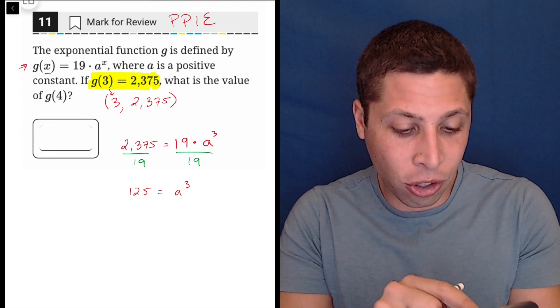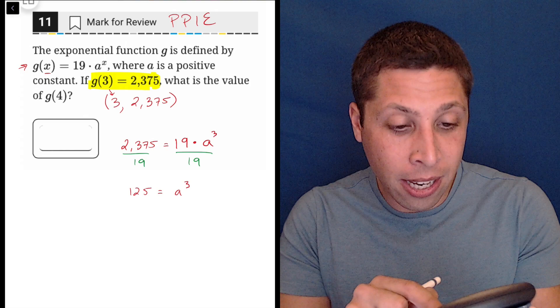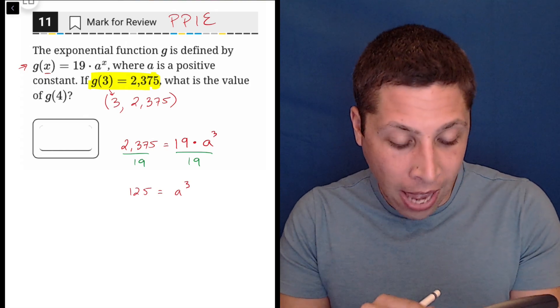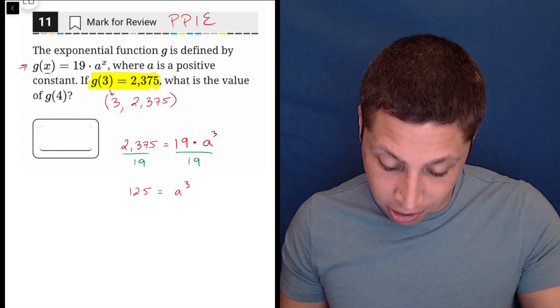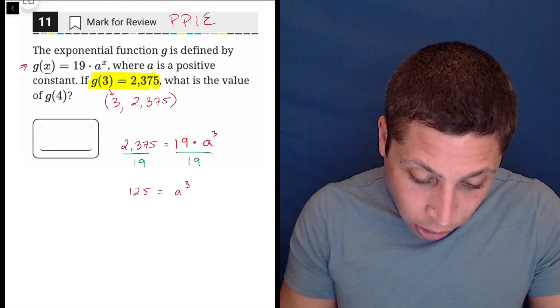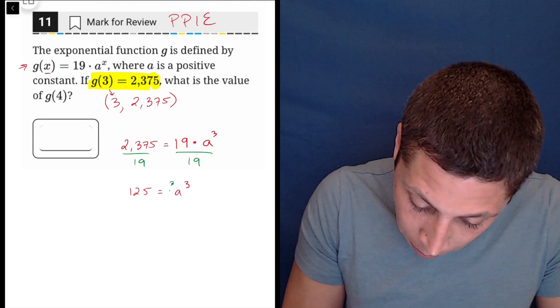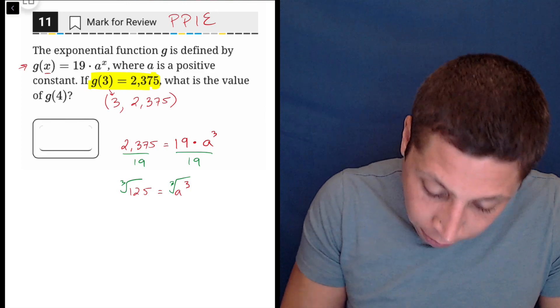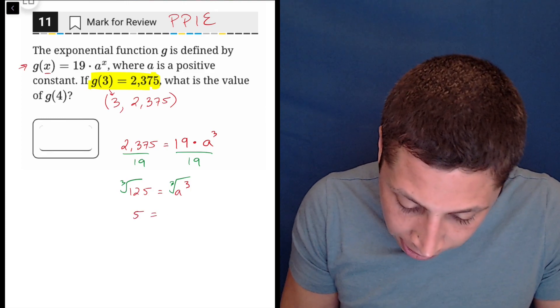And I know this in my head, but I'm just going to show you anyway. And we're going to do the cubed root then of both sides. And the cubed root of 125 is five.